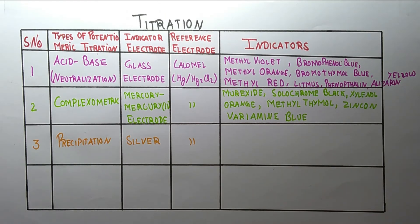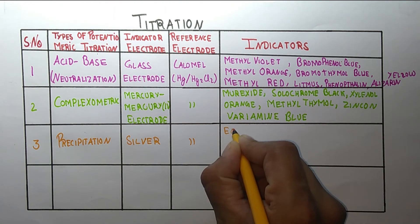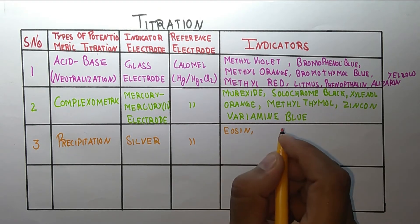What are the indicators used in this? The indicators are eosin, fluorescein, and rose bengal.